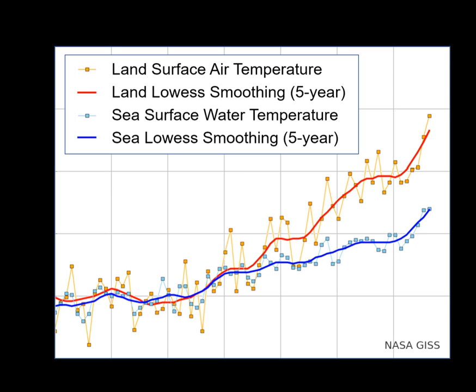Sea surface temperature is the water temperature close to the ocean's surface. The exact meaning of surface varies according to the measurement method used, but it is between 1 mm and 20 m below the sea surface.